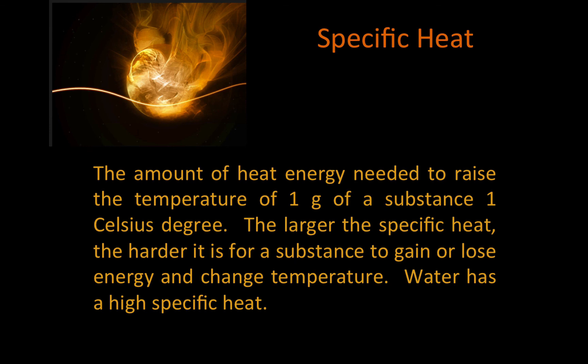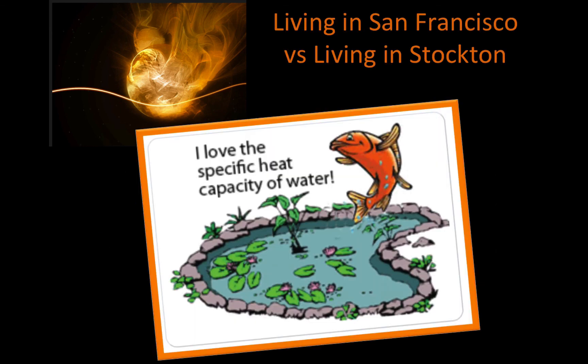The larger the specific heat, the harder it is for a substance to gain or lose energy and change temperature. Water has a high specific heat, which means it tends to have a moderating effect on climate — it takes a lot for water to change temperature. That is why cities on an ocean have a moderate climate compared to those far from water.